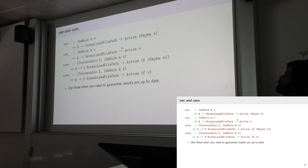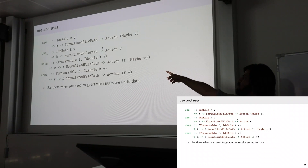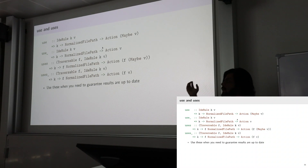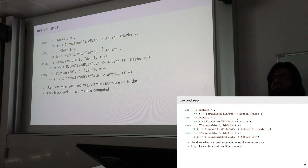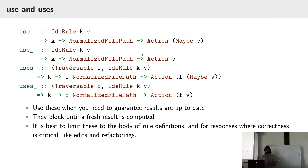Use has a bunch of variants: use with underscore which doesn't return a maybe but throws an exception if the rule fails; uses which lets you request a bunch of things at once across multiple files and computes them all in parallel; and the underscore version of uses. These blocking variants will wait for things to become up to date or give you a failure. They always guarantee your results are up to date and should be used inside rule definitions where correctness is critical — for example, when doing a big refactoring where you want to be sure you're working with the latest correct view of the code.